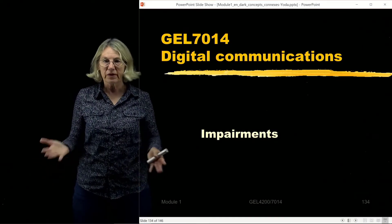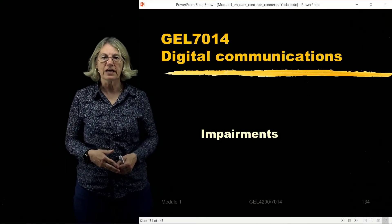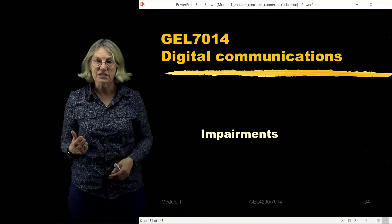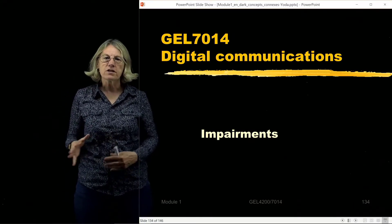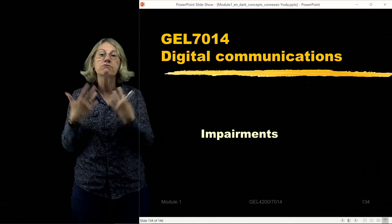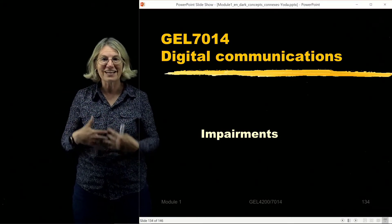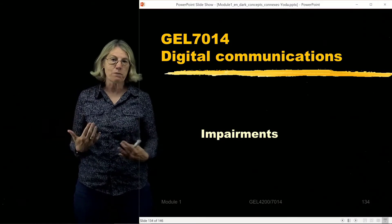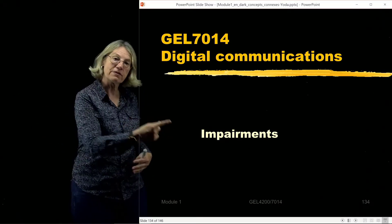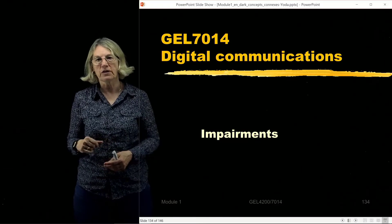We've talked about the three criteria that are most important for a communication system: power efficiency, spectral efficiency, and the cost or complexity of the system. When we're confronting these challenges to get as good as we can on these three criteria, what is it that's holding us back? What's holding us back are different kinds of impairments to our digital communication system.